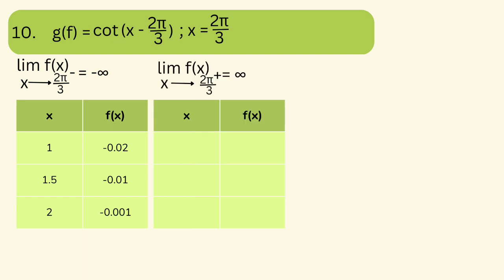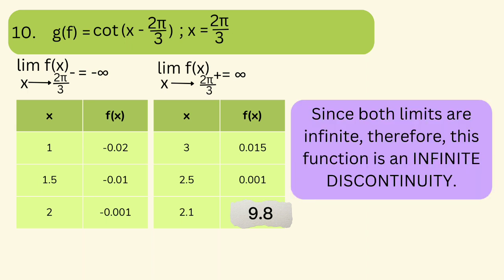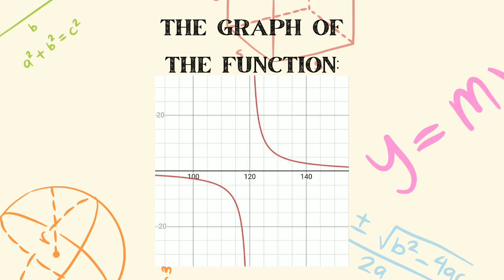For the right side, the limit of f(x) approaches positive infinity as x approaches 2π/3 from the right, with x values 3, 2.5, and 2.1. For 3 we get 0.015; for 2.5 we get 0.001; for 2.1 we get 9.8. Since both limits are infinite, we can conclude that this function is an example of infinite discontinuity.